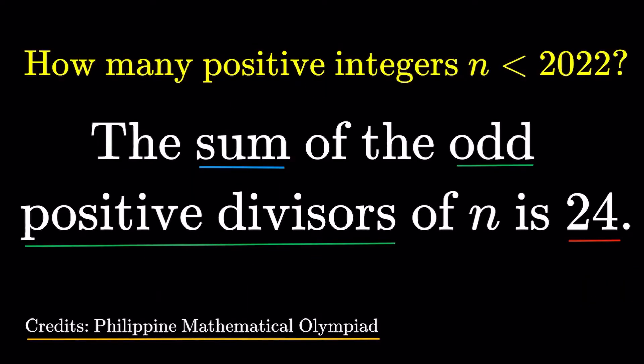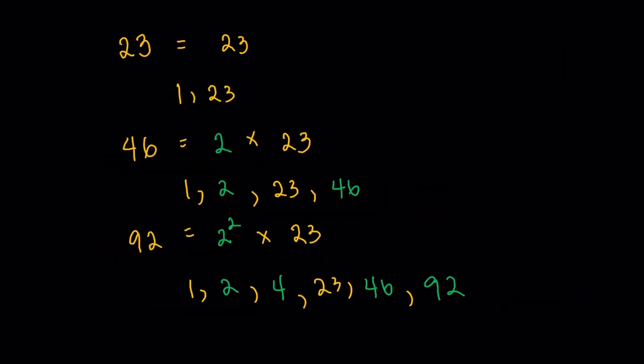Now, since the sum of the odd positive divisors is 24, well 23 is one of them. Because the factors of 23, 23 is prime, so just 1 and 23. And with the same logic, a power of 2 times 23 should also have the sum of the odd divisors being 24. So 1 plus 23, that's 24 obviously. In the 46, 2 and 46, removing those, it's just going to give me 1 and 23. And similar reasoning for the 92.